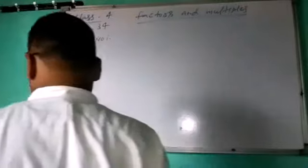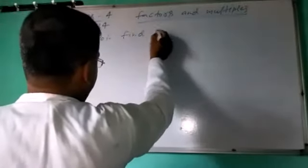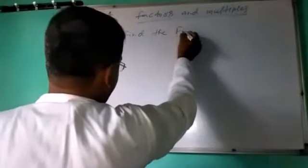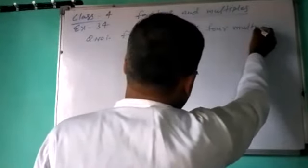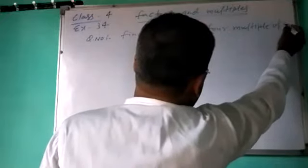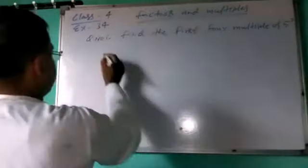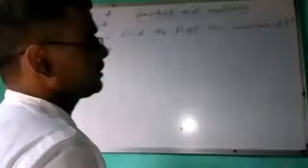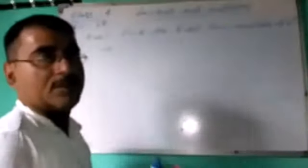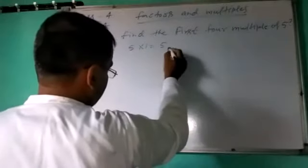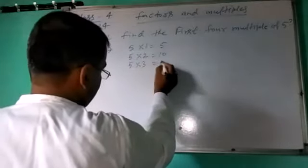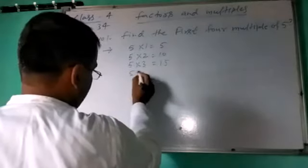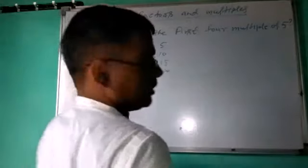Find the first 4 multiples of 5. Here multiples means table of 5, 4 times. So, first time, 5 ones are 5. Second time, 5 twos are 10. Third time, 5 threes are 15. Fourth time, 5 fours are 20. This is your answer.